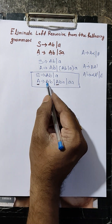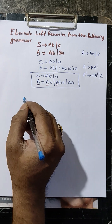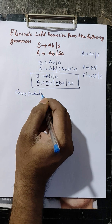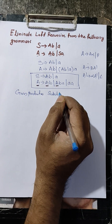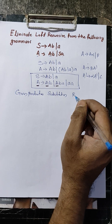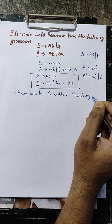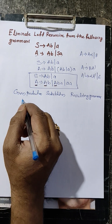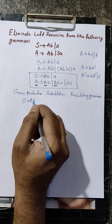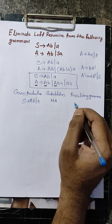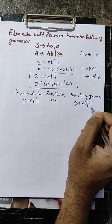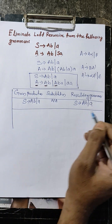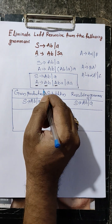Here the first production is kept as it is. This production is replaced with the first production as it is. This is the even production substitution. Resulting grammar: first production as it is. S produces a, b or a — this is not applicable. S produces a, b or a. First production we can keep as it is.